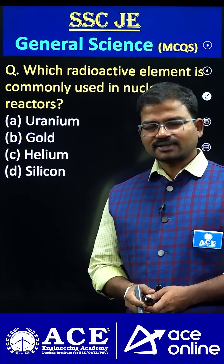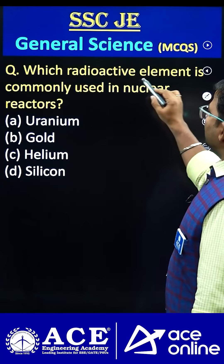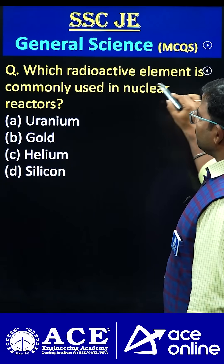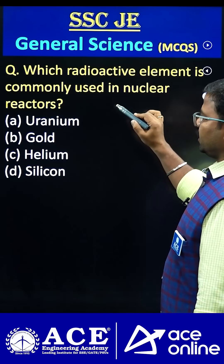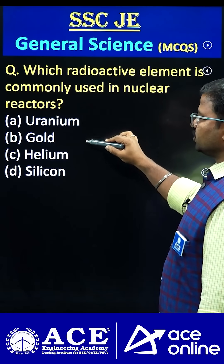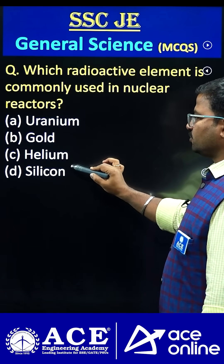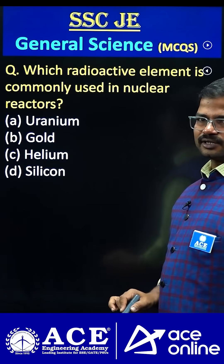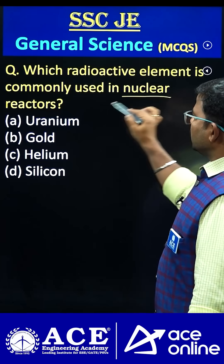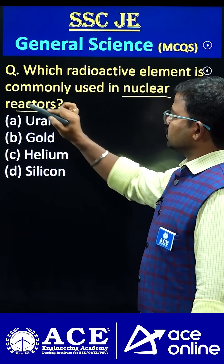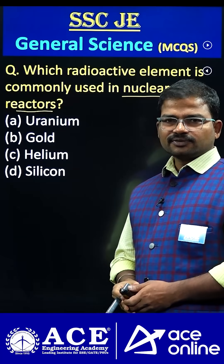Hi students, welcome to Ace Online. Which radioactive element is commonly used in nuclear reactors? The options given are: uranium, gold, helium, and silicon. In nuclear reactors, we are generally using radioactive elements.